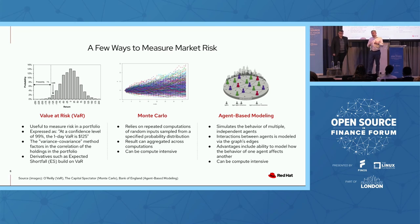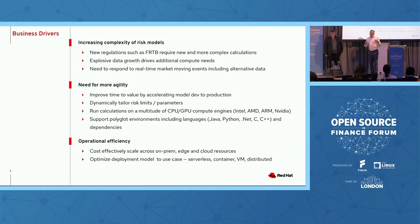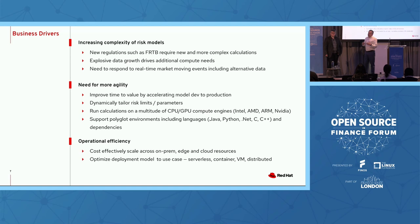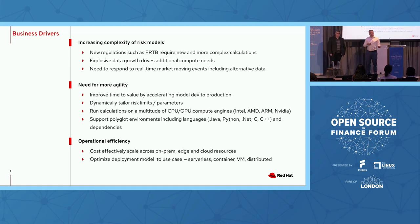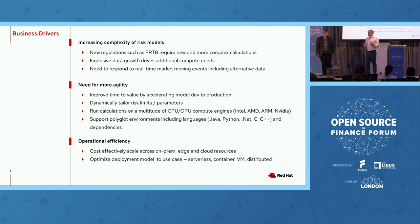VaR doesn't tell you the maximum loss — it's a probabilistic measure. It's calculated using Monte Carlo simulations, where you can run a thousand, five thousand, or a hundred thousand different simulations, then look at confidence intervals. More interesting approaches include agent-based modeling, where different actors' behaviors impact one another — climate risk is a good use case for that. To get here today, Marius and I surveyed a number of our customers and partners and identified three key challenge themes.